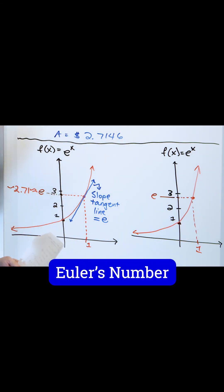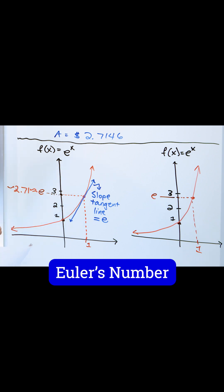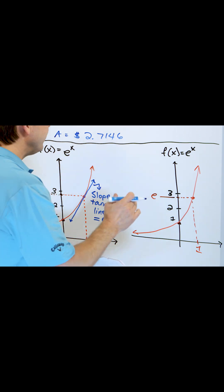Another interesting thing about it: the slope of the line that you get is equal to the value of the curve at that point itself.